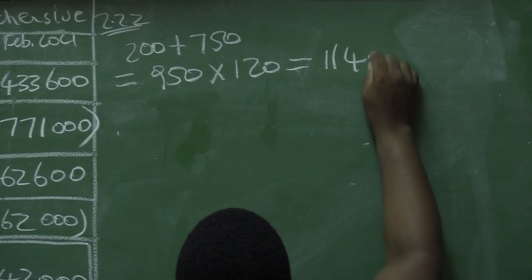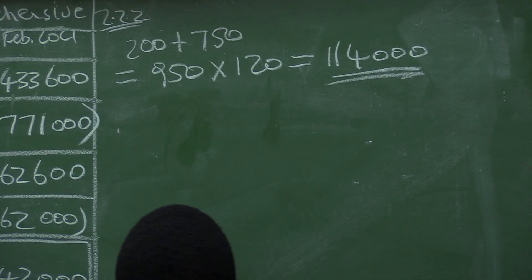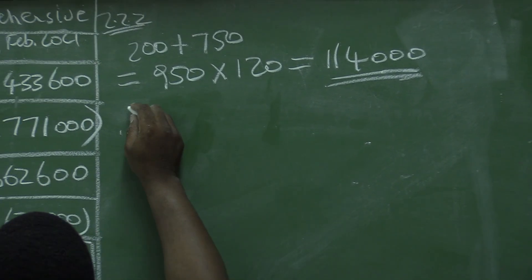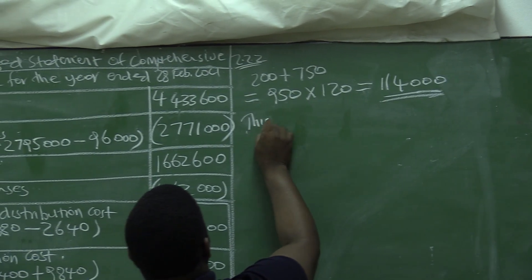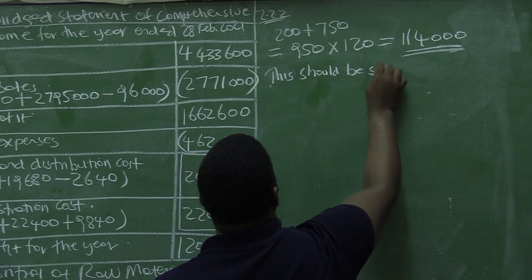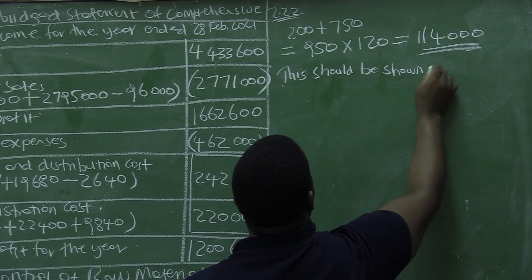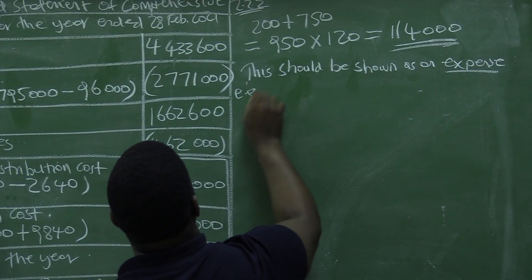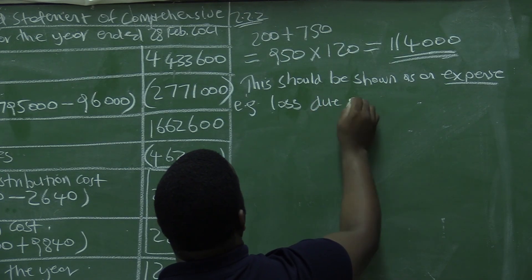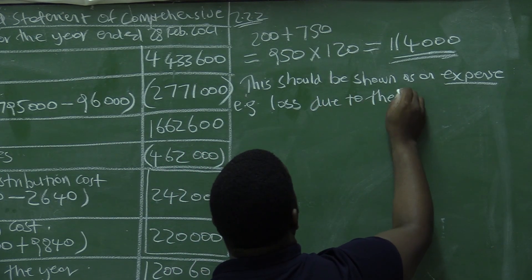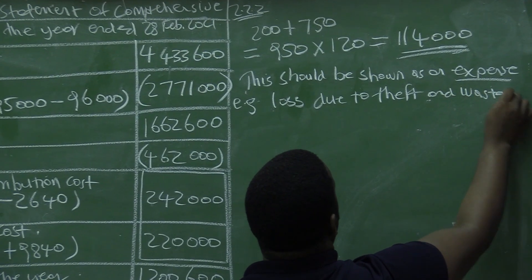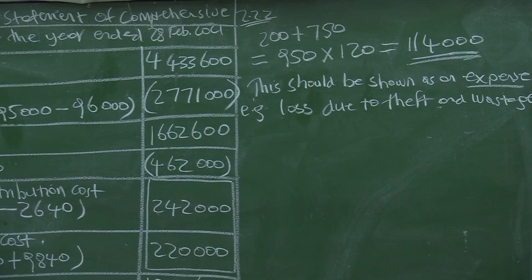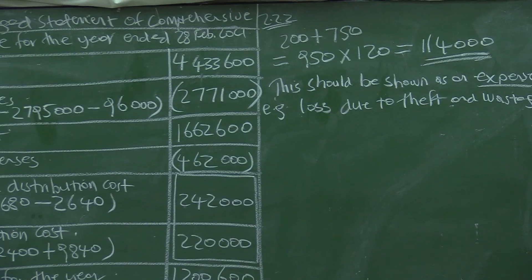The business has lost a total of 114,000. How this 114,000 should be shown in the statement mentioned above: it should be shown as an expense — as a loss due to theft and wastage. That is 2.2.